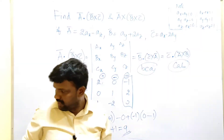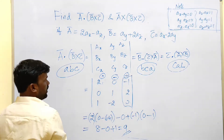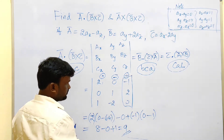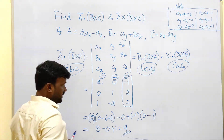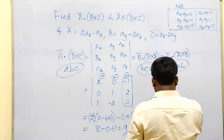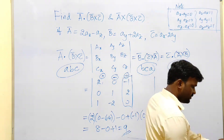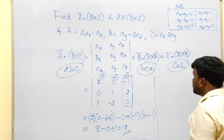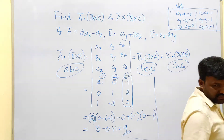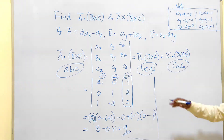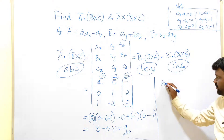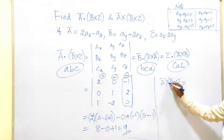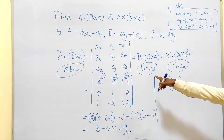Now we move on to the vector triple product. How do we find the vector triple product a bar cross (b bar cross c bar)? We use a standard formula, which I am writing now.